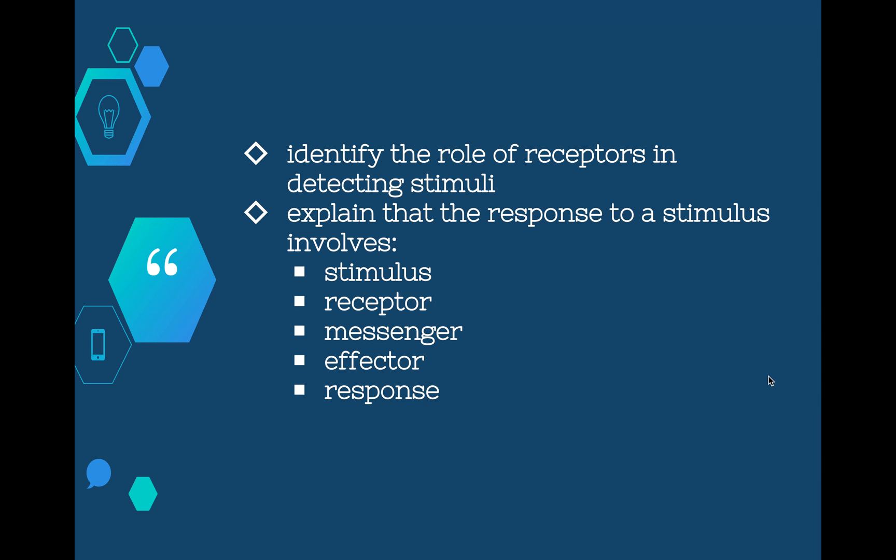Welcome to this video in the communication series. This video is going to be looking at two dot points: the first being identify the role of receptors in detecting stimuli, and explain that the response to a stimulus involves a number of things including a stimulus, a receptor, a messenger, effector and a response.